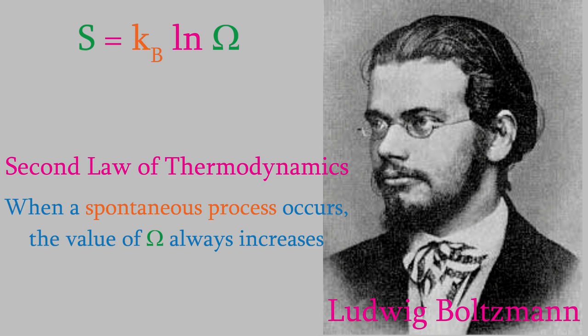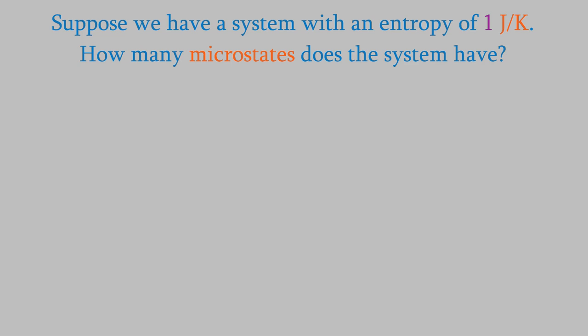It's hard to express just how large the number of microstates is for a typical system, but let's try to get a sense of it. Suppose we have a system that has an entropy of 1.00 joules per kelvin. How many microstates are there in this system?